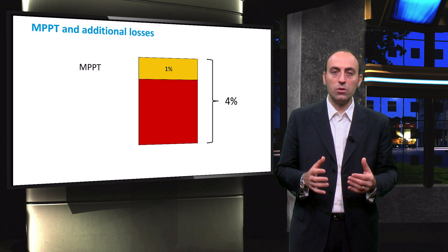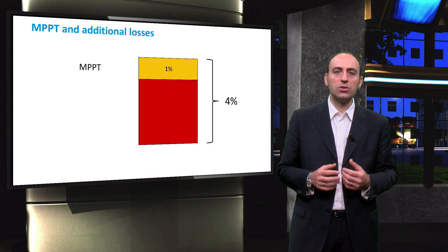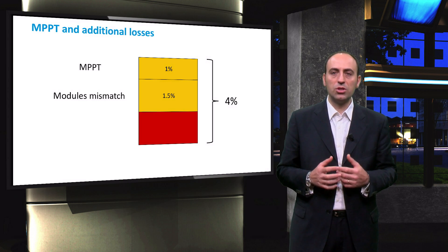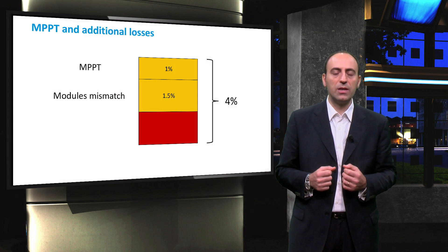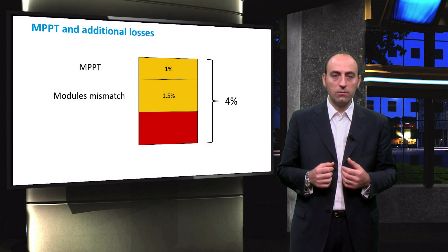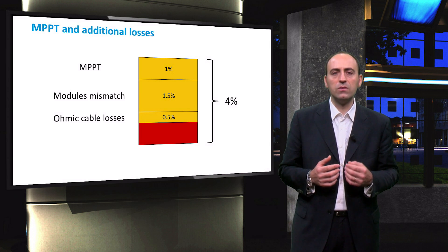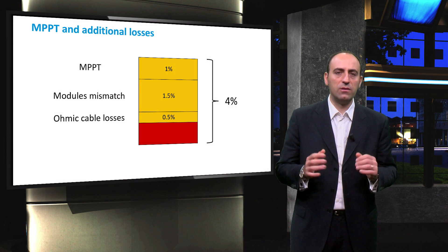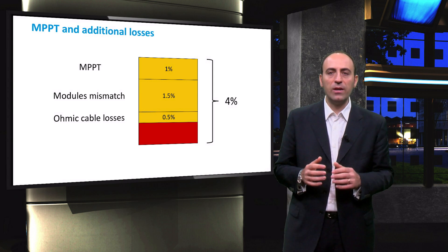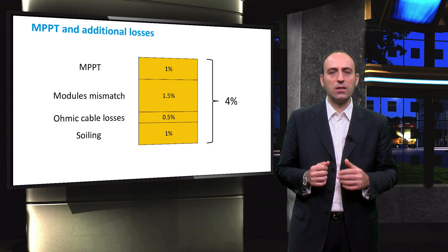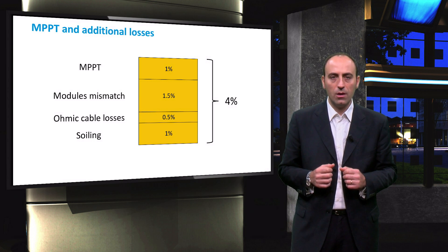Among the other losses worth mentioning, we can mention the mismatch between modules, which accounts for roughly 1.5%, ohmic losses related to external cabling of the inverter, usually considered to be around 0.5% if not determined analytically, and finally, soiling losses as an additional loss of 1%.